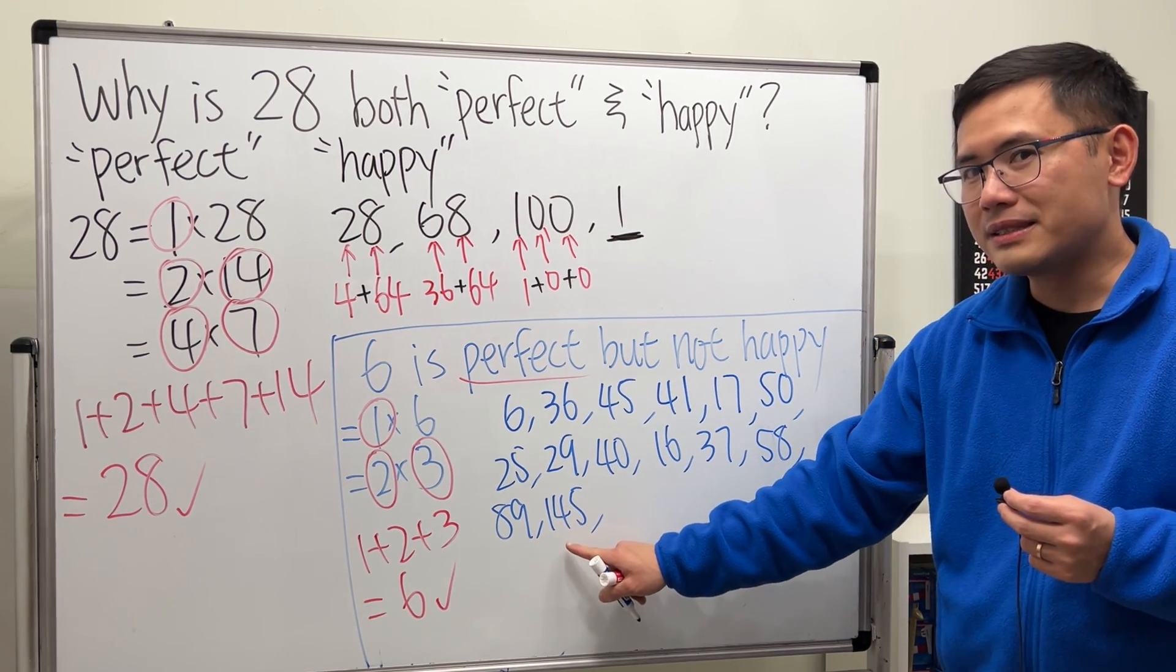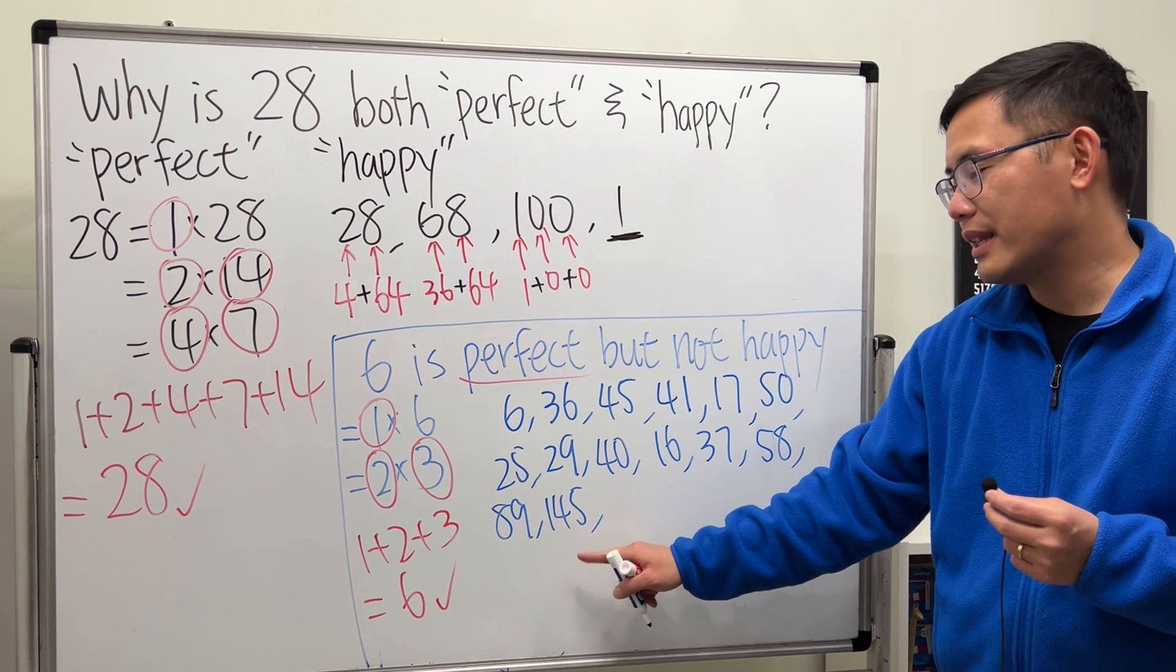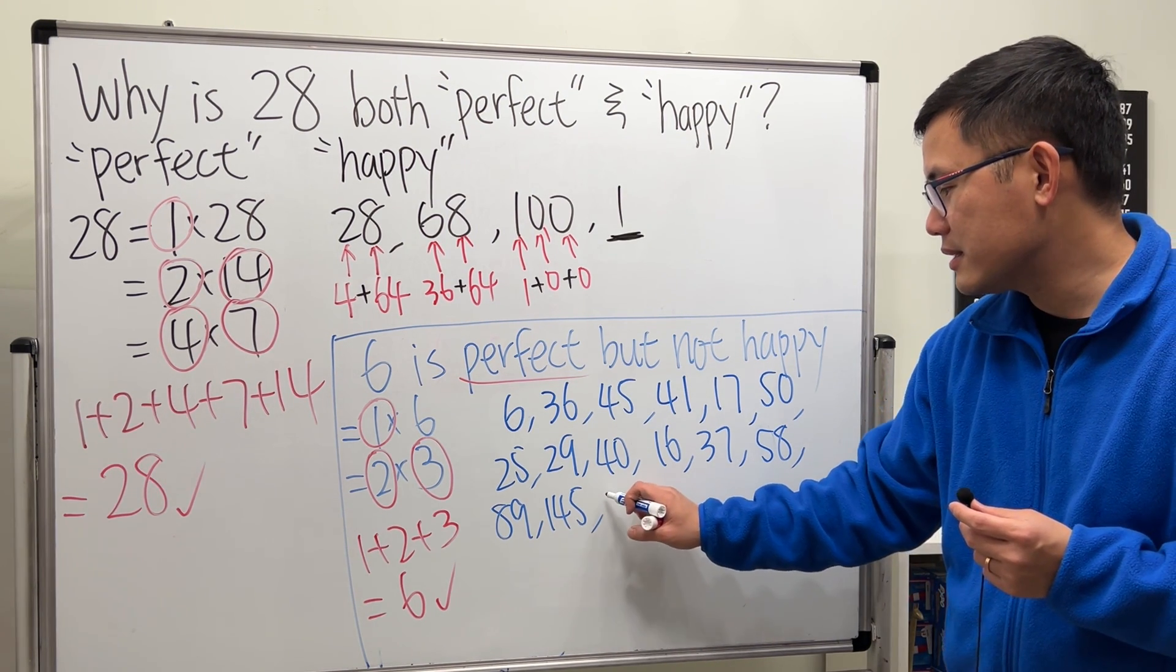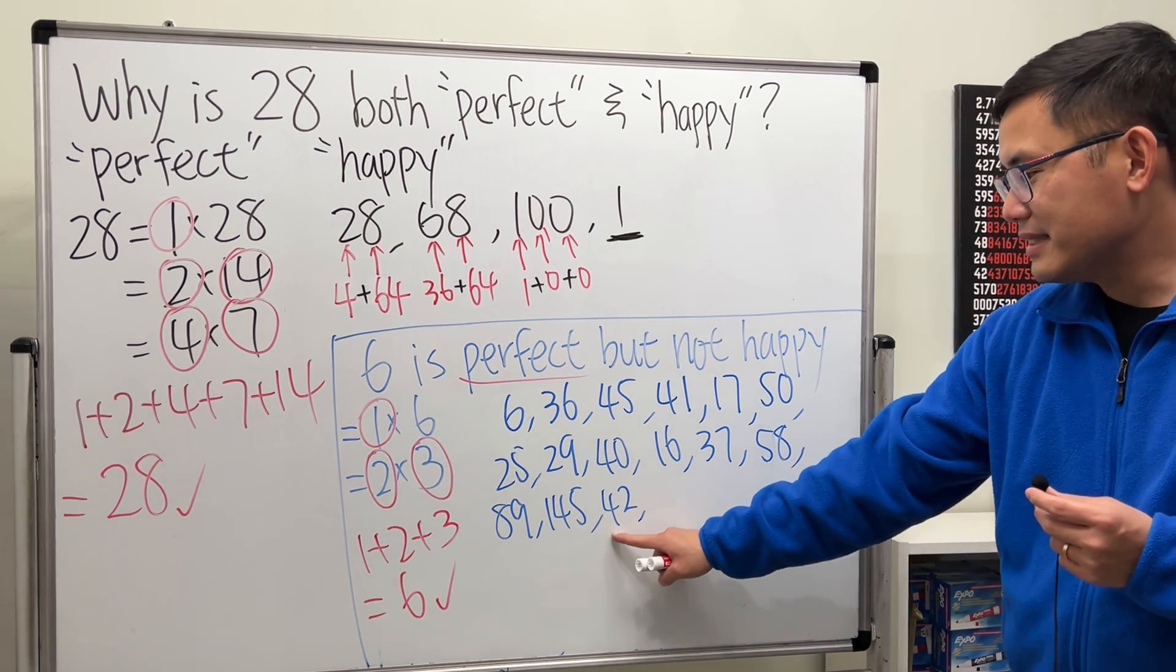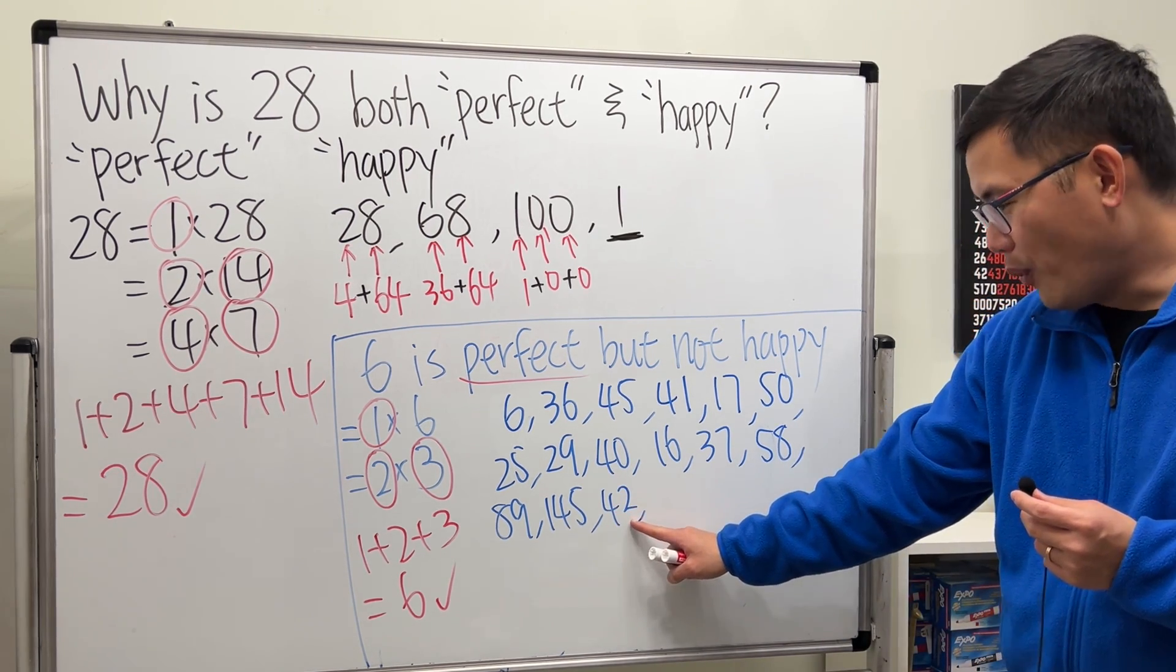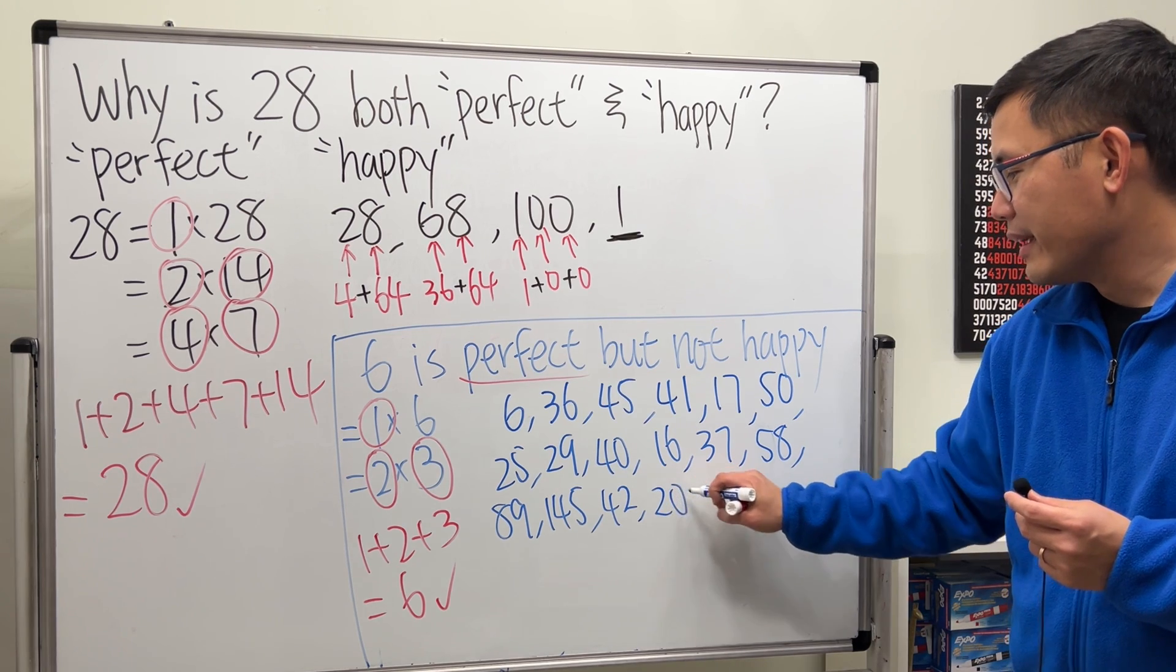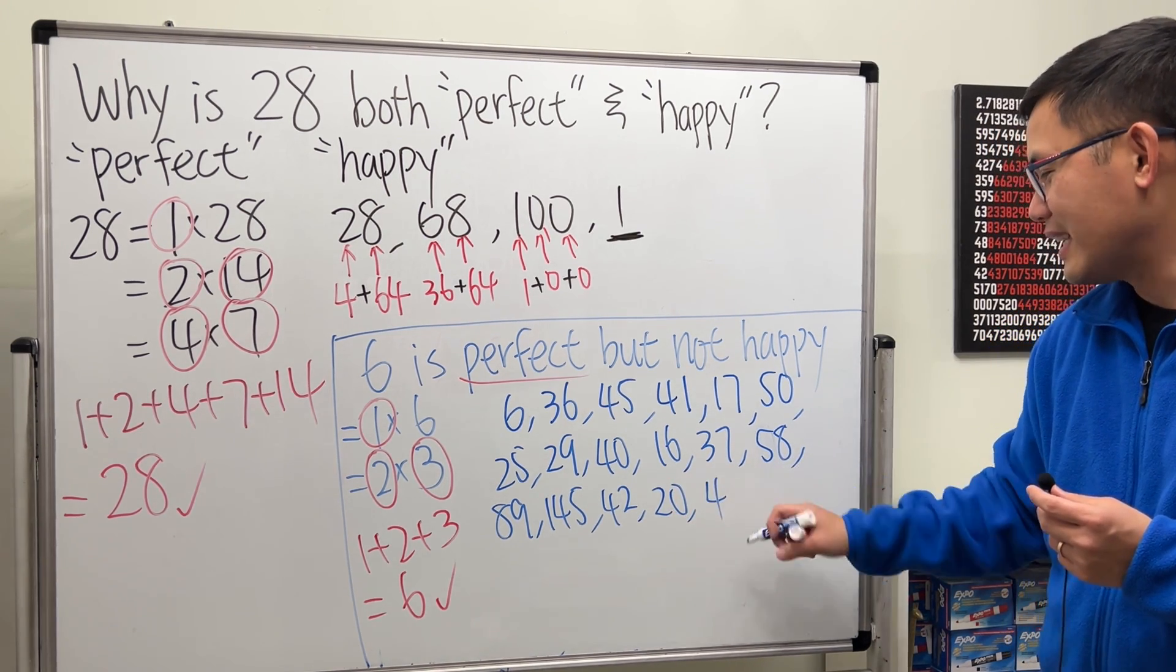1 plus 16, which is 17, and then plus 25 is 42. And then 16 plus 4, which is 20.